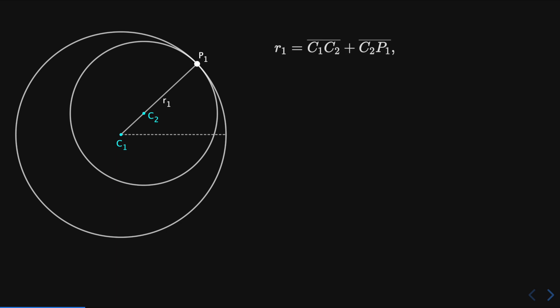Now before finding the centers, first consider the following equation. This implies that c1 c2 is equal to r1 minus c2 p1. We know the value of c2 p1 is equal to r1 times s, so this is equal to r1 minus r1 times s. Factoring, we have r1 times 1 minus s.